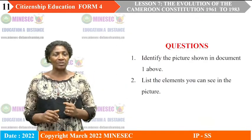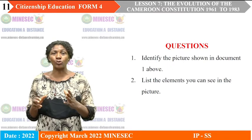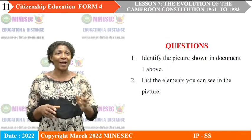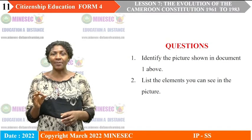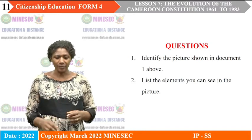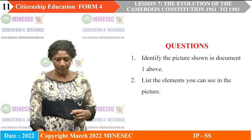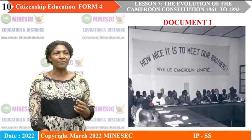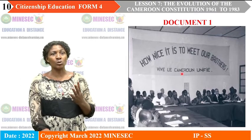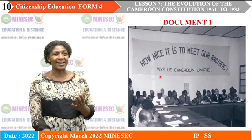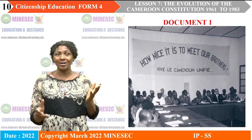Let's look at the questions to explore the document. Question 1: identify the picture shown in Document 1. Question 2: list the elements you can see in the picture. When we look at this picture, the inscription 'How nice it is to meet our brothers' and 'Vivo lo Cameroon Unifié' carries information leading us to reunification.